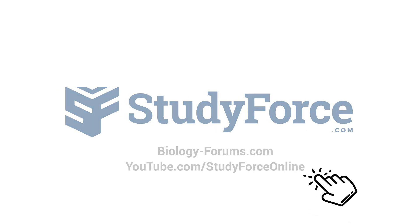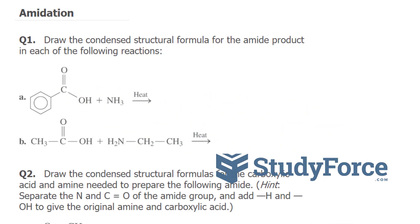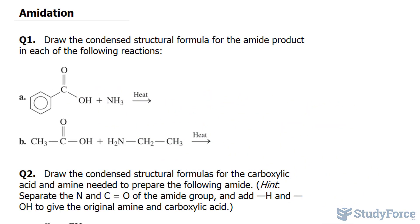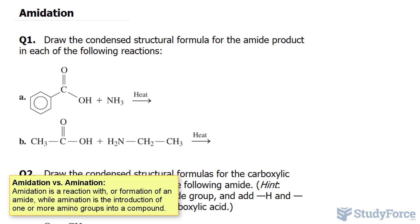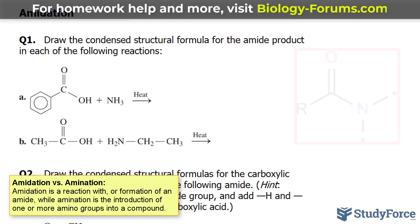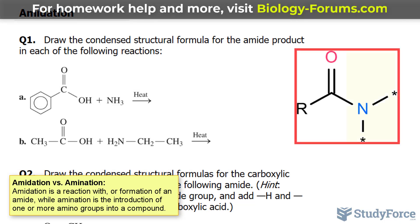In this lesson, we'll be discussing the process of amidation. This is not to be confused with amination. Amidation is the process whereby nitrogen is incorporated into an organic molecule forming an amide. An amide is a compound containing an amine bound to a carboxyl group, as you can see on the screen.